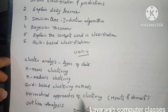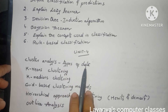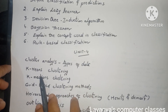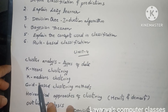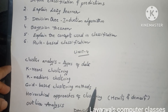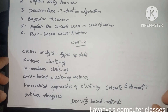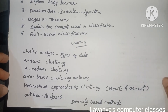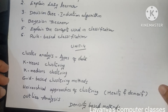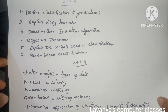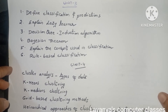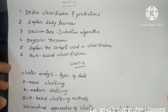Unit 4 covers cluster analysis and types of data. K-means clustering algorithm is very very important, followed by K-median clustering algorithm, grid-based clustering methods, hierarchical approaches of clustering with merits and demerits. Outlier analysis and density-based methods — explain everything with numerical methods to get very good marks. These all are the important questions in unit 4.